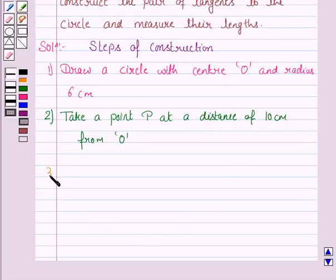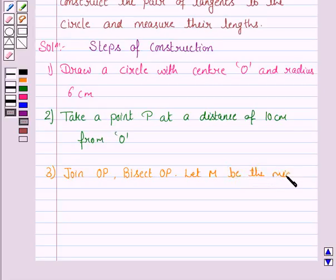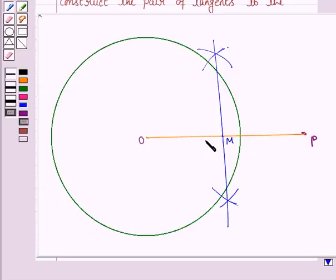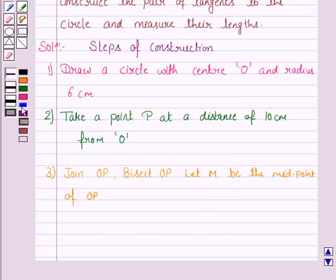Now, the next step is join OP, bisect OP. Let M be the midpoint of OP. So, we have joined OP and we have bisected OP and it is bisected at the point M.